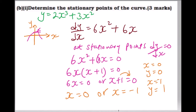So our turning points are (0, 0) and (−1, 1). When x equals zero, y equals zero, and when x equals minus one, y equals one. Those are our stationary points and by doing that you get yourself three marks.